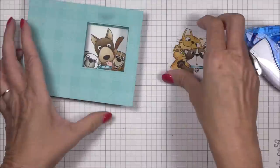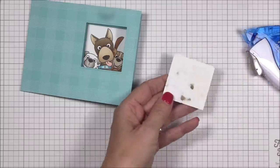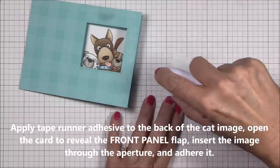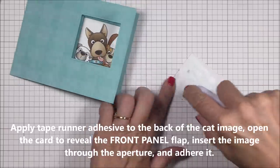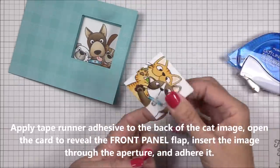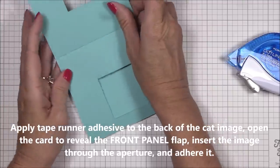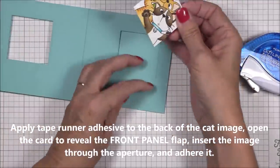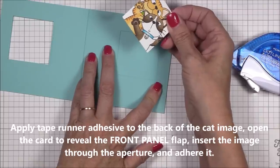Once you know that the image is good and stuck, you can move on to the next step, which is to apply tape runner adhesive to the back of the cat image. Now you need to open the card so that the front panel flap moves into position. Position that cat image inside the aperture and adhere it to the back side of the front panel flap.